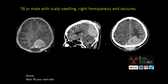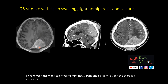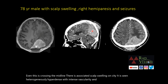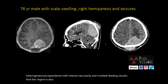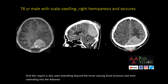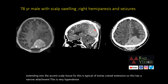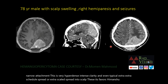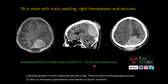Next case: a 78-year-old male with scalp swelling, right hemiparesis, and seizures. There is an extra-axial intensely heterogeneous enhancing mass lesion crossing the midline with associated scalp swelling. On CT, it is heterogeneously hyperdense with intense vascularity and multiple feeding vessels. The lesion extends beyond the bone, causing bony erosions and extending into the scalp tissue. This narrow attachment, hyperdensity, intense vascularity, and extra-cranial spread into the scalp favor hemangiopericytoma.